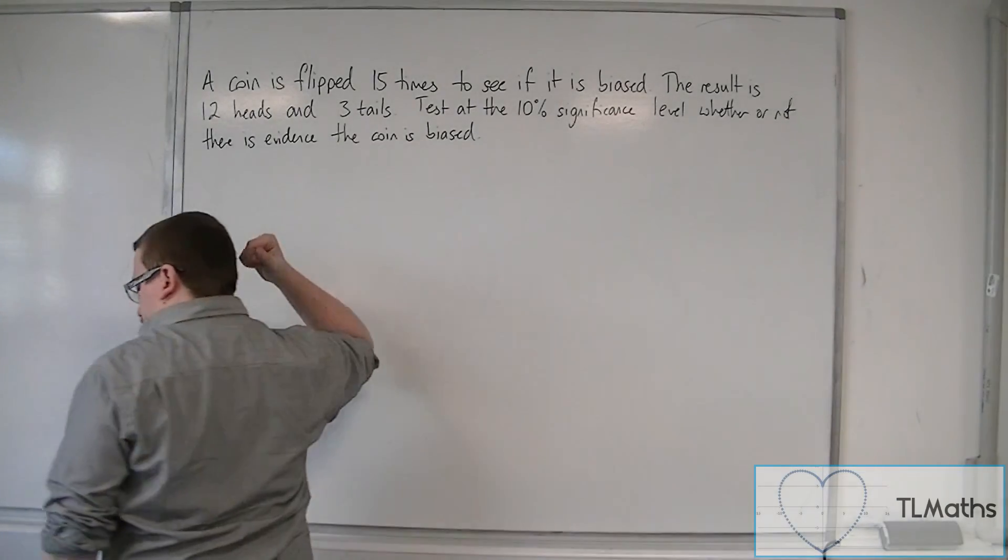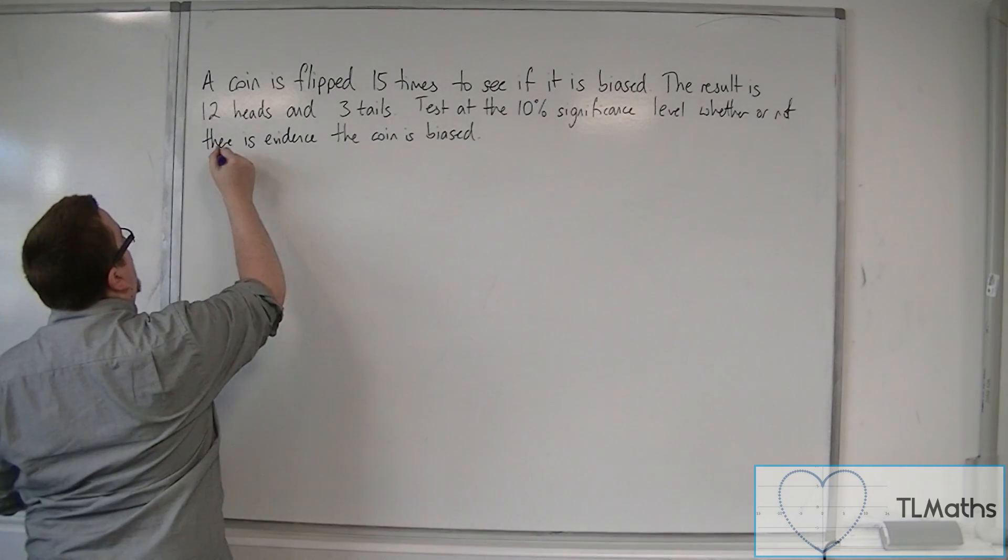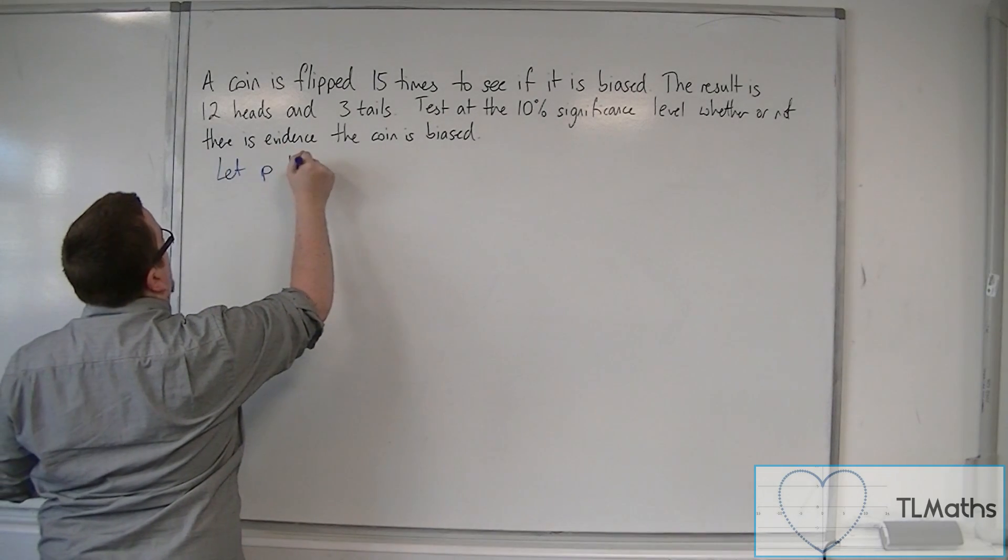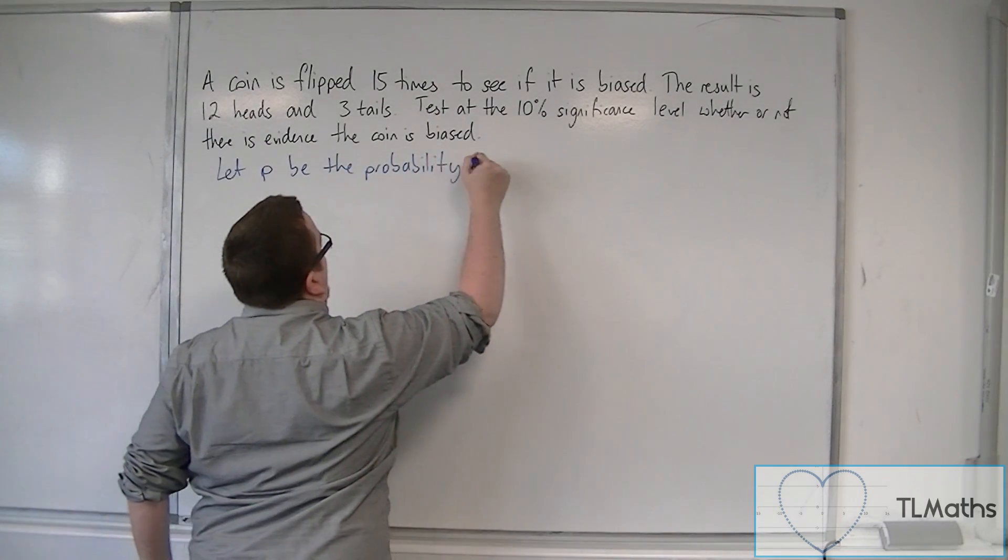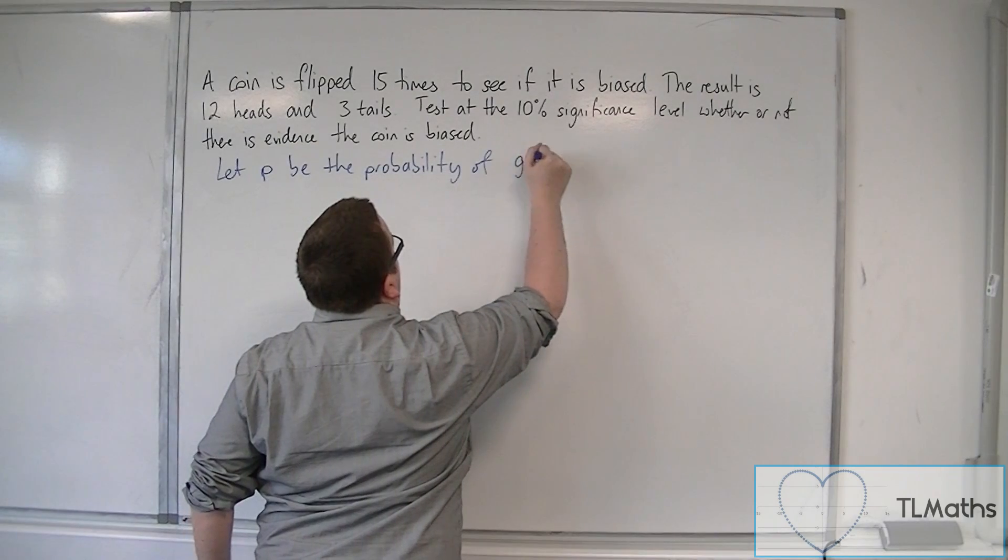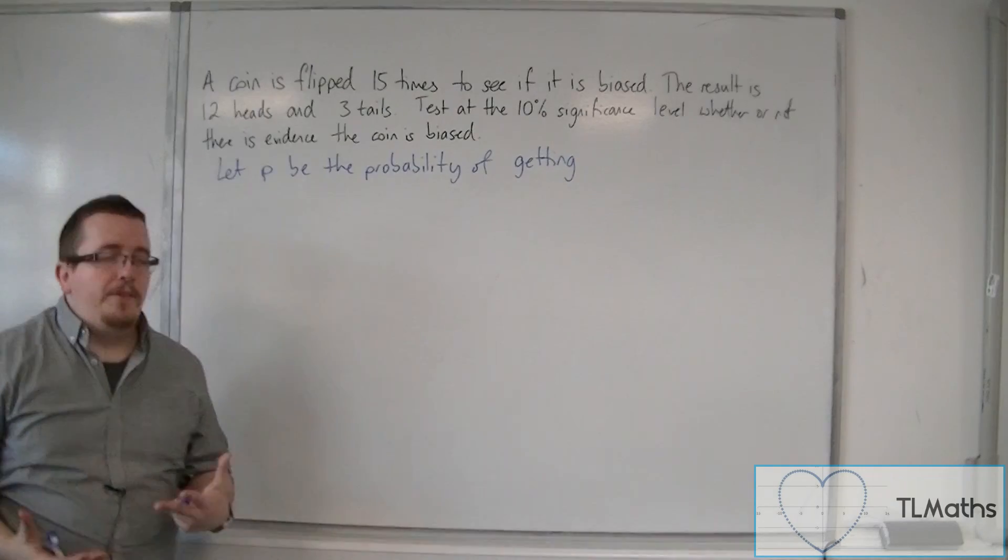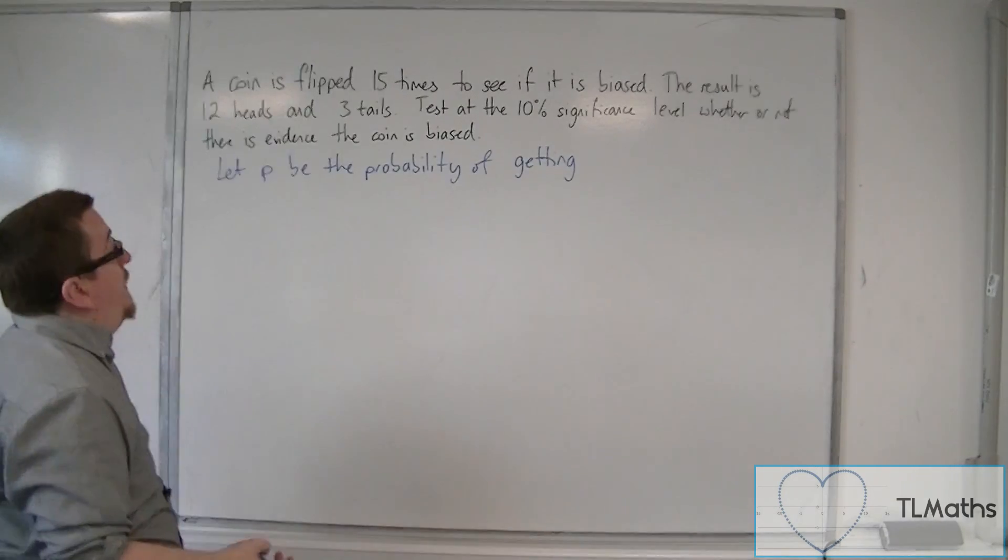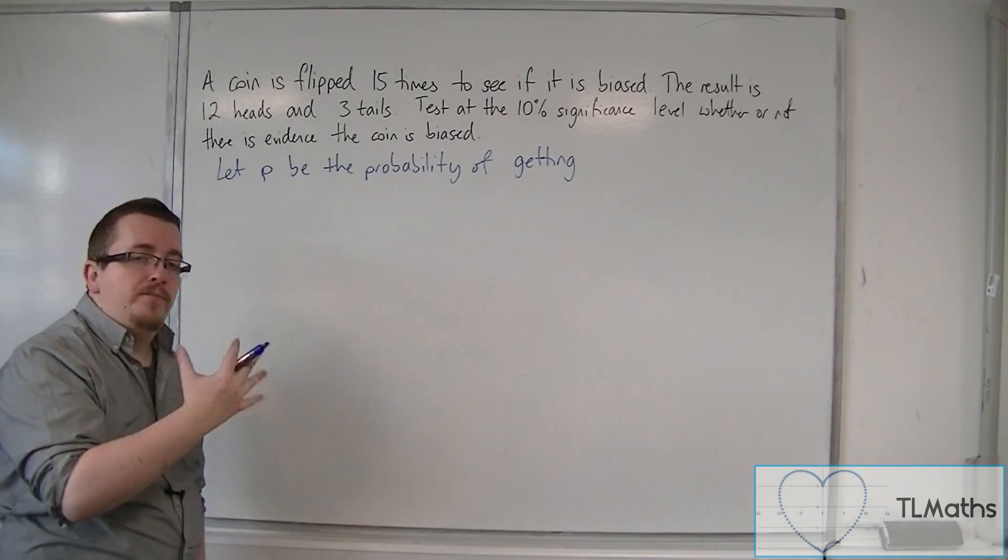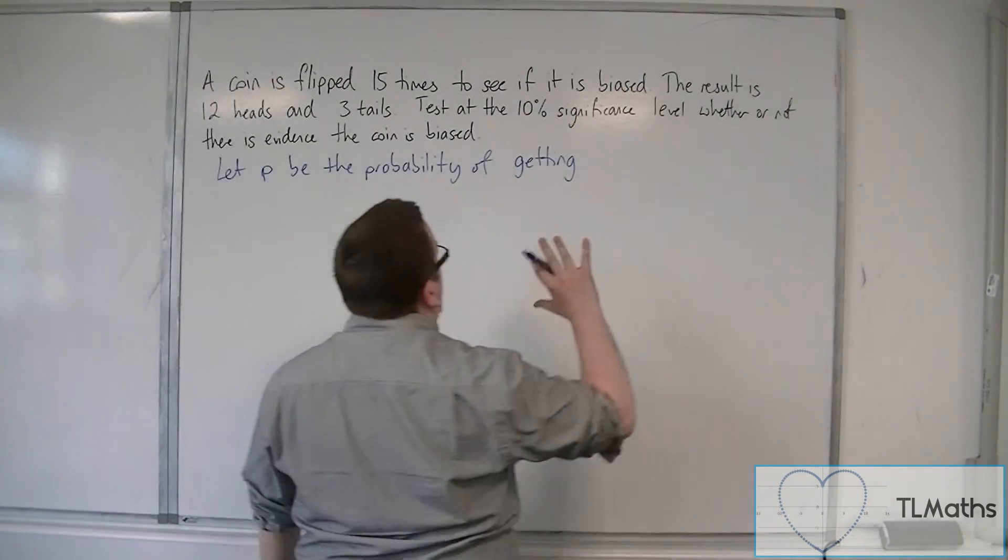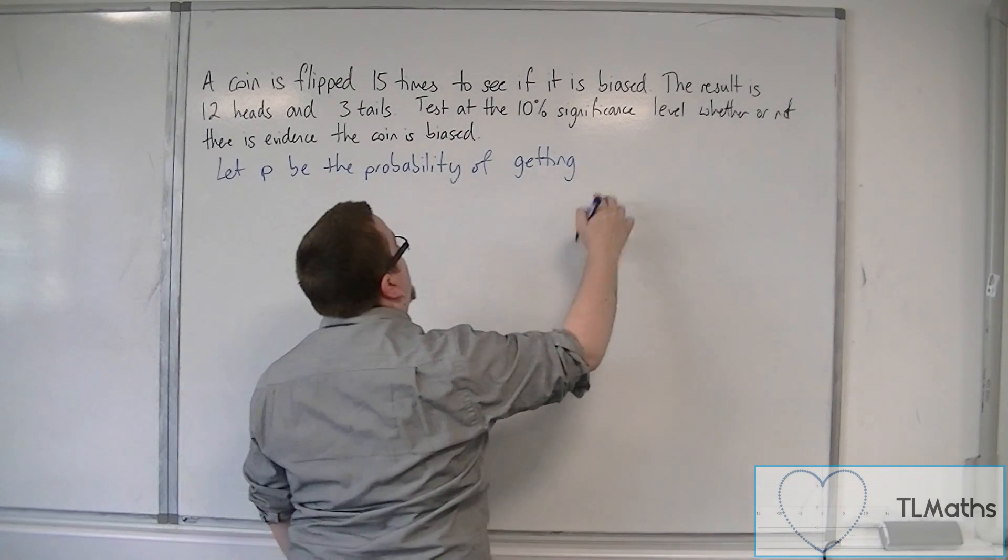Okay, so first of all, we're going to set up what P is. So let P be the probability of getting, well, seeing as we're just trying to determine to see if the coin is biased, really we could choose to either look at heads or tails here. I'm going to look at heads. You can do it from the similar point of view of tails and you should get the same answer. So let P be the probability of getting heads.